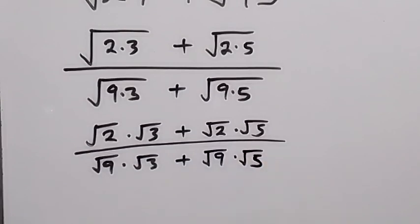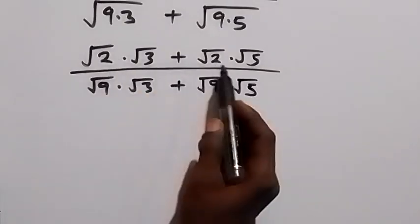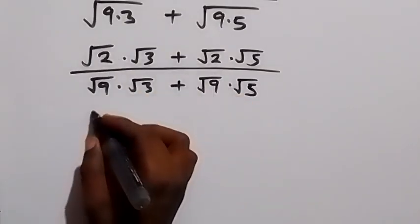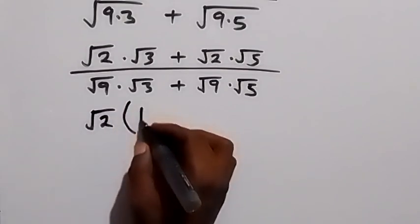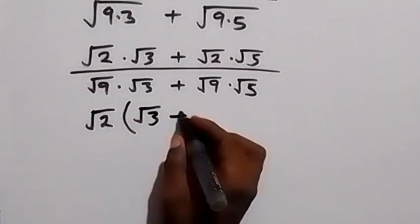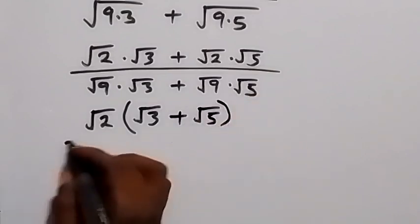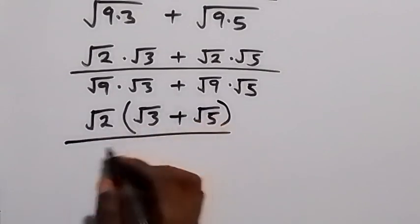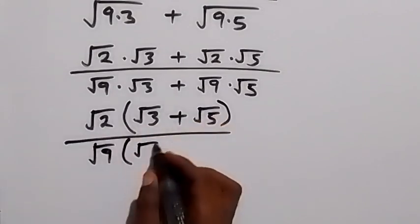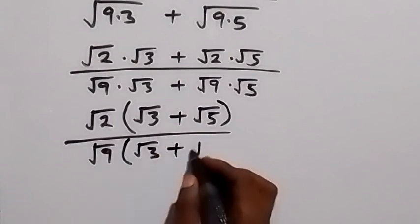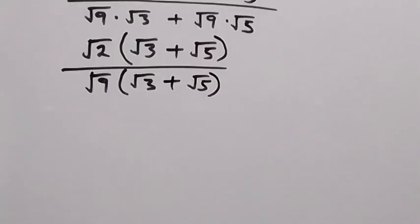In the next step, root 2 is common in the numerator — let's factor it out. This gives us root 2 times bracket (root 3 plus root 5), divided by root 9 times bracket (root 3 plus root 5).